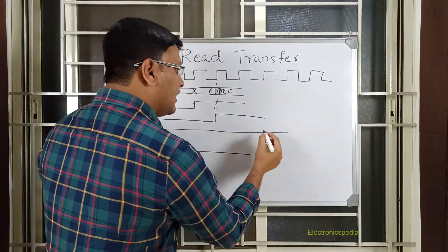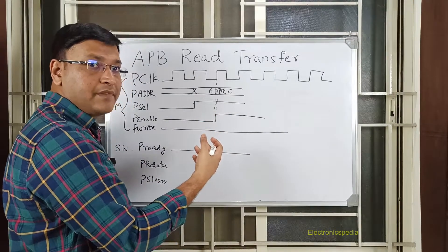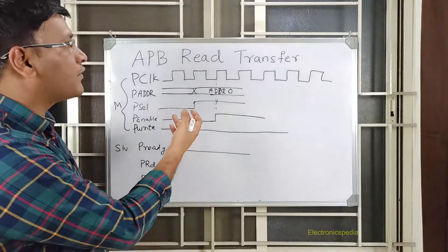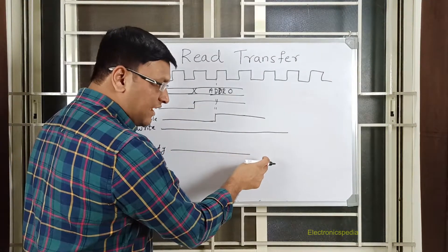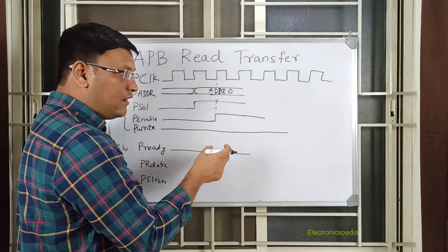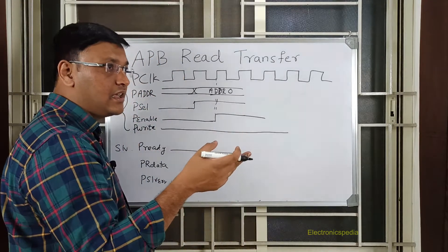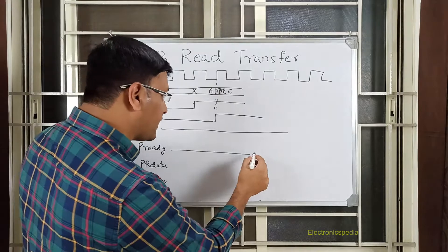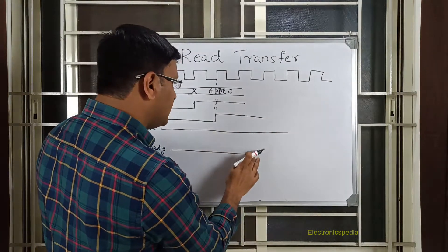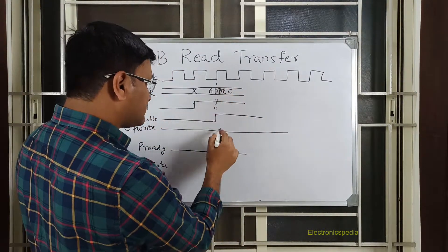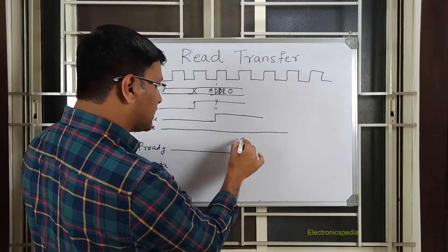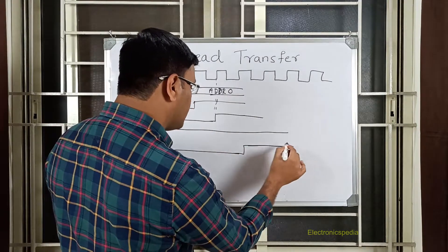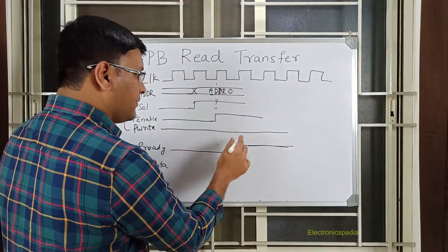So here when PENABLE is asserted, this is my setup phase and after that this is my access phase. Just like in a write transfer, we will have a wait state also for reads. If my slave is ready with the data - that means the slave is ready to give the data - then it can assert PREADY. So assume that in the next clock cycle PREADY is asserted.